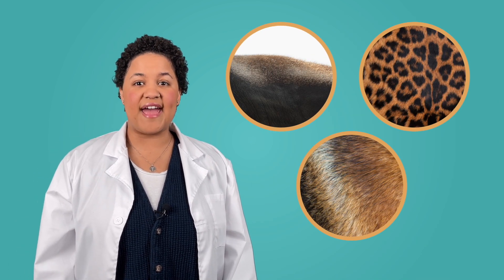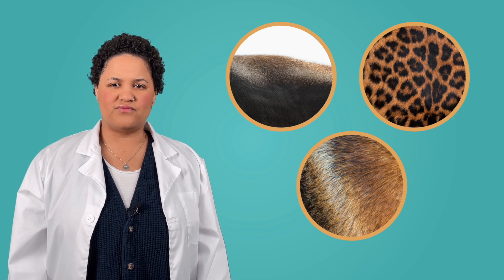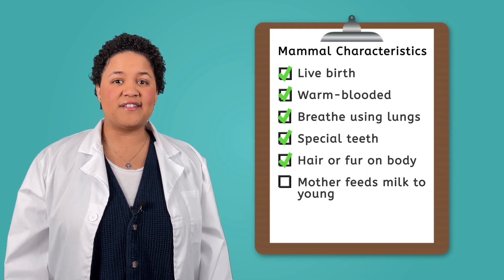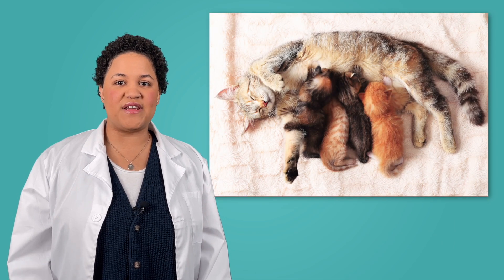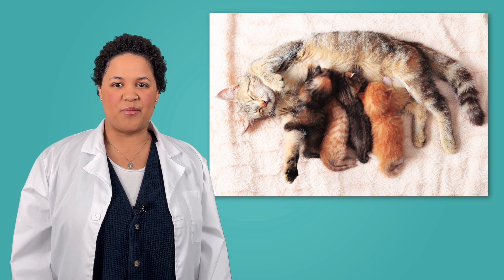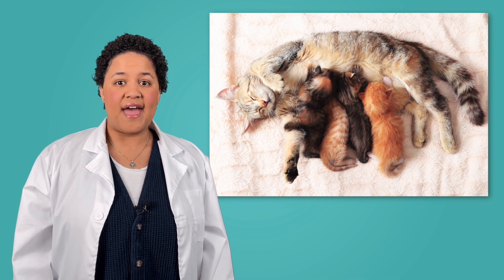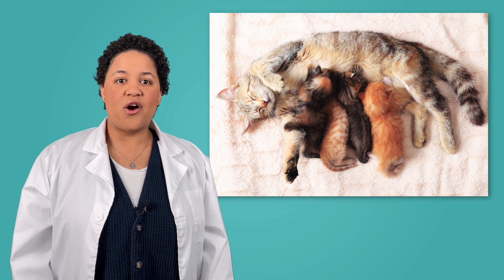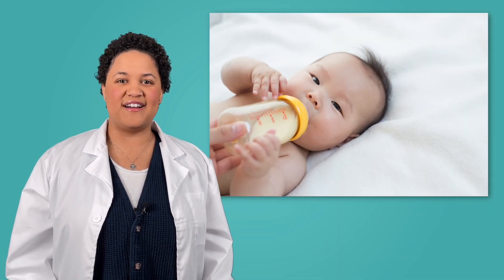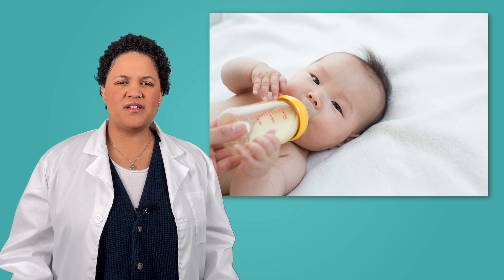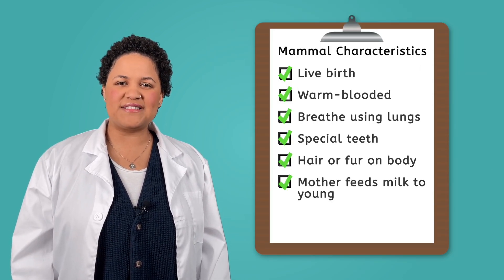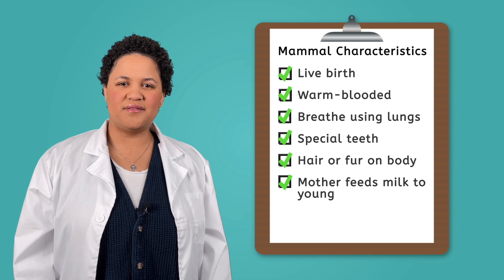Mammals also have hair or fur on their bodies. Many humans have hair on top of their head, but did you know we also have tiny soft hair all over our skin? Take a closer look at your skin and I'll bet you'll spot some. Finally, mammals can be categorized by the mothers feeding milk to their young. When human babies are born, they don't have teeth and they can't eat solid food. Instead, what are they fed? Milk or formula? That's right. So, are humans part of the mammal classification? We sure are.